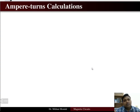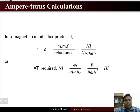Welcome to the next lecture in magnetic circuits. We are going to discuss the ampere turn calculations and the series and parallel magnetic circuit. In a magnetic circuit, the flux is given by MMF divided by reluctance, where MMF is the product of number of turns and current, and reluctance is given by length divided by the product of cross-sectional area and permeability (µ0 × µr).